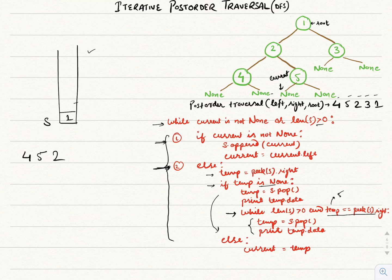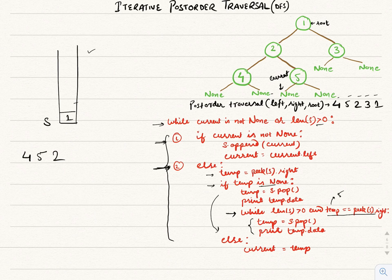The loop continues as current is pointing to none but the stack length is still greater than zero. It falls under the second condition again. The top of the stack's right is 3, so temp gets the value 3. Since temp is not none, it falls under the else condition and current is set to 3.